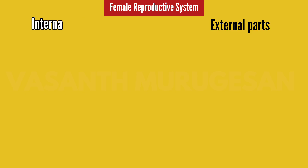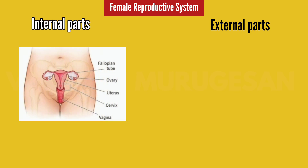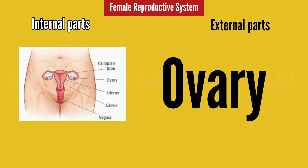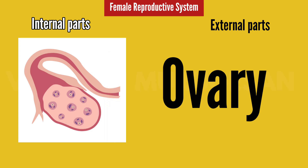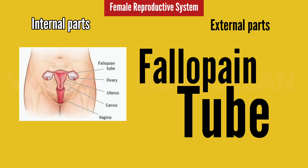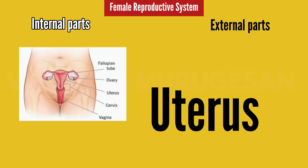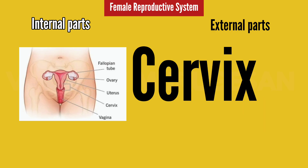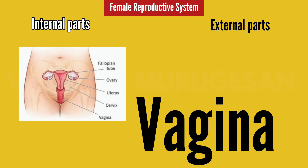First, what are the internal parts of the Female Reproductive System? If you look at this, the first is the Ovary. In the ovary there are sex cells — this is a vital organ. Then it is the Fallopian tube, followed by the Uterus, then the Cervix, and then the Vagina. These are the Internal Parts of the Female Reproductive System.